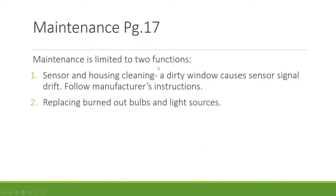Maintenance is limited to two main functions: cleaning the sensor and housing to prevent buildup that would cause sensor drift (specifically zero drift), following manufacturer instructions regarding cleaning solutions and avoiding abrasives. Some devices have automatic washers or spray jets. The other maintenance task is changing bulbs and light sources — modern electronics will notify you as the bulb ages and needs replacement.